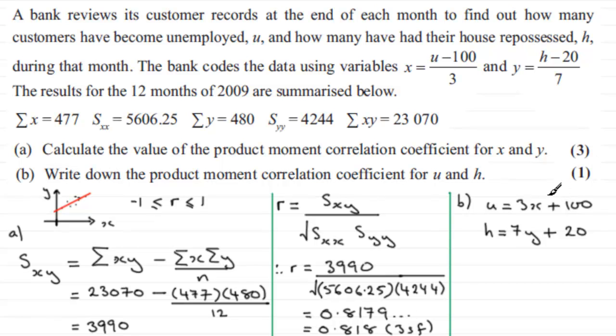I feel there's a bit of a giveaway anyway when it's just got 'write down' and it's one mark. So what we can say is that the product moment for u and h equals 0.818 to three significant figures. I hope that's given you an idea across those two parts of the question.